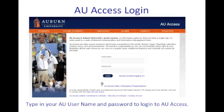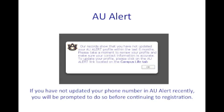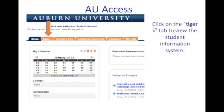Your AU username is your initials with the numbers that follow it. If you haven't updated your phone number with AU Alert in a while, this message will come up reminding you to do that when you're logged in. Once you are logged in to AU Access, the second tab at the top is your Tiger Eye tab.